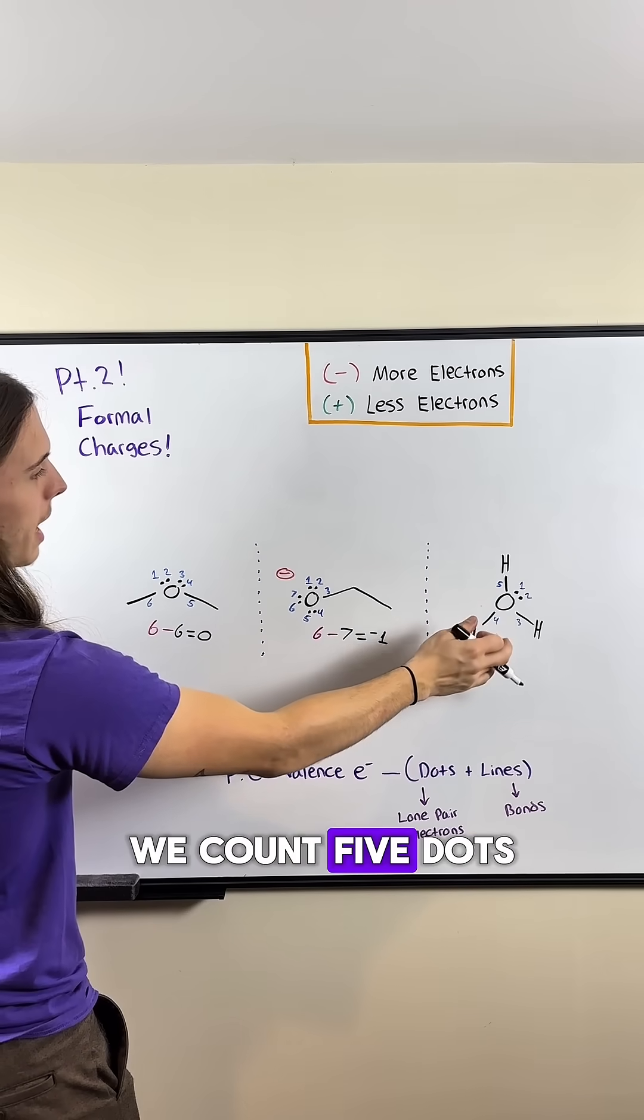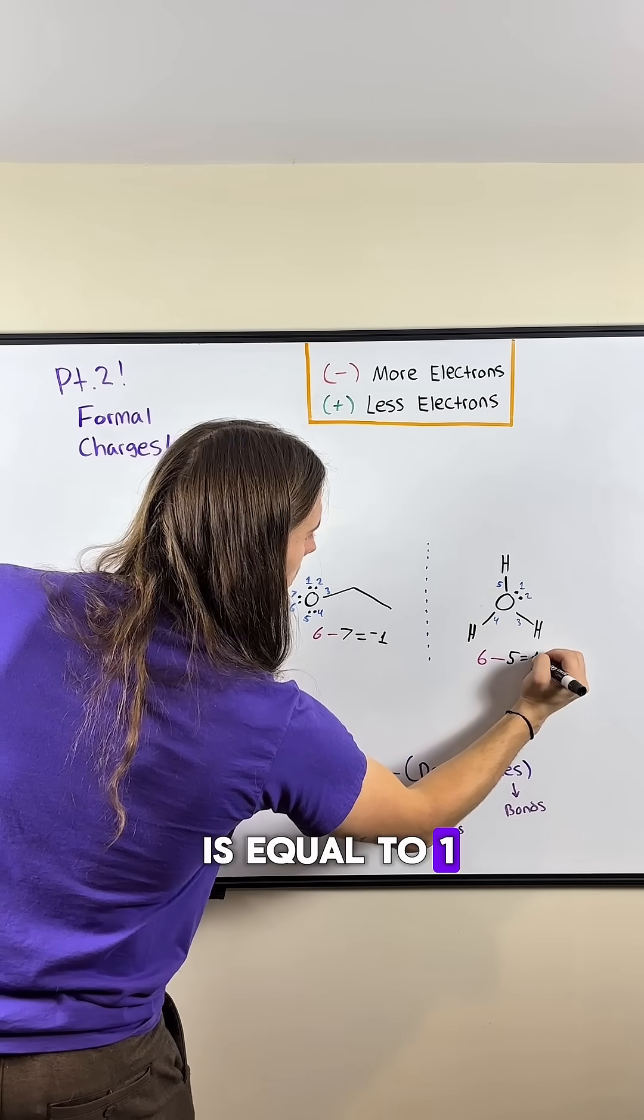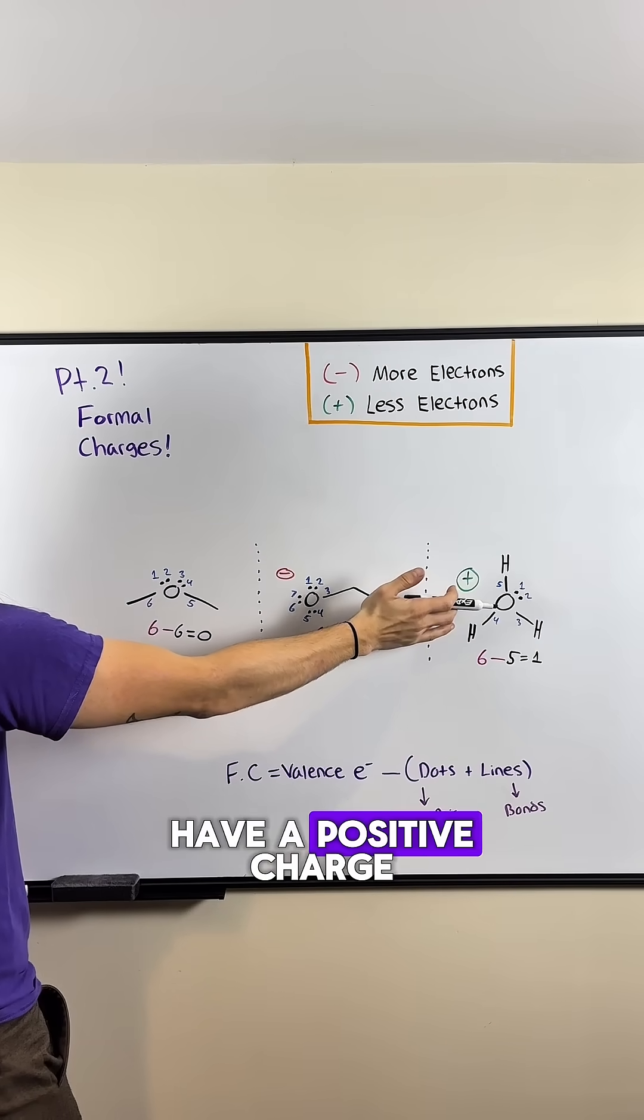And then in our last one, we count five dots and lines around our oxygen, so six minus five is equal to one, meaning our oxygen will have a positive charge.